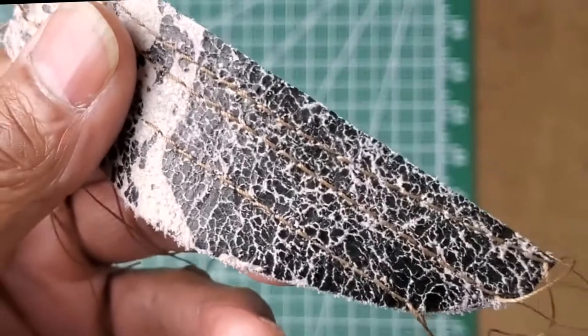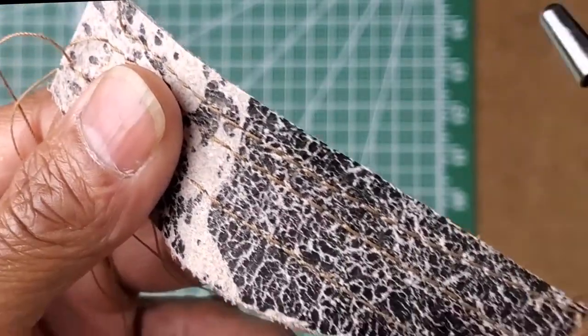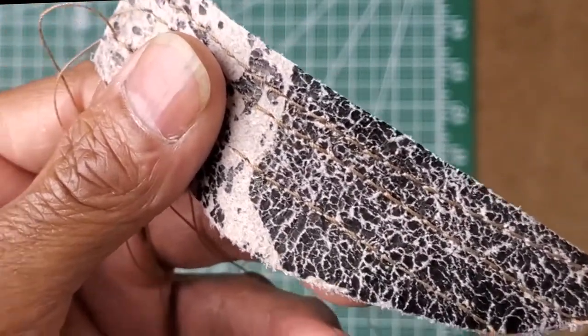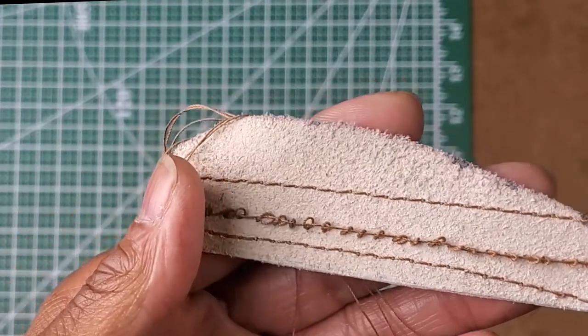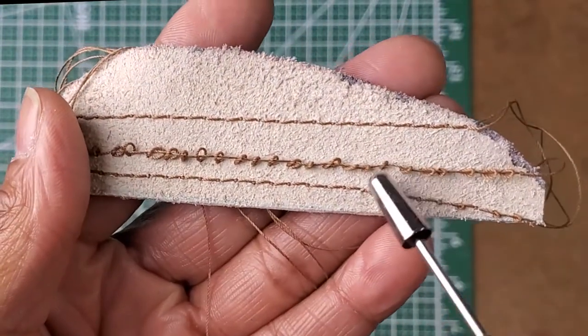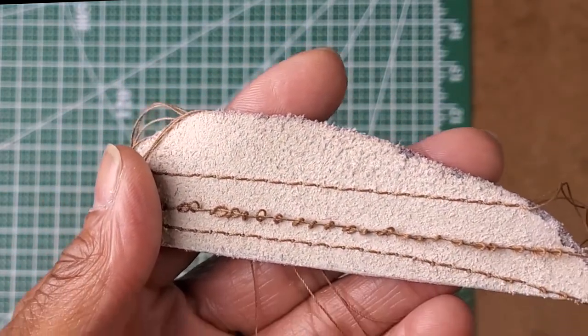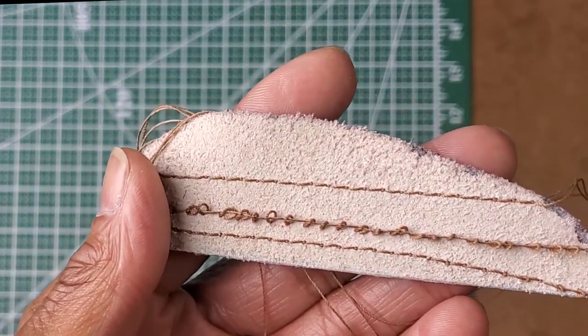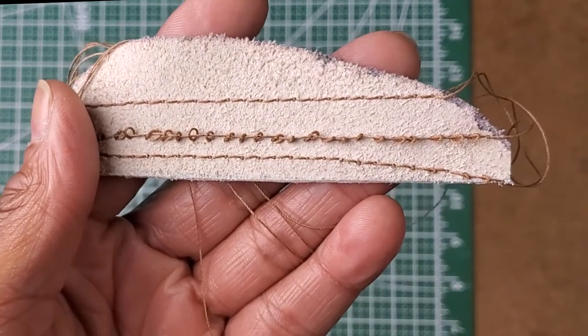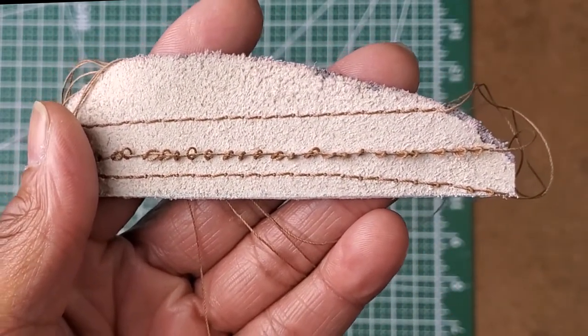As you can see on the right side, the stitches are great, but on the bottom is where it was showing up loose. So what I did, I tightened the upper tension. Do not tighten the lower tension, tighten the upper tension.